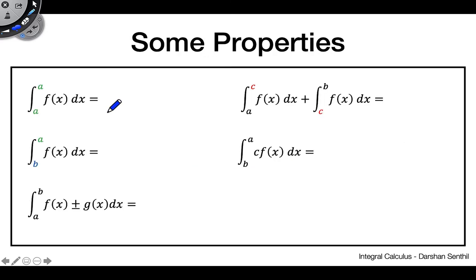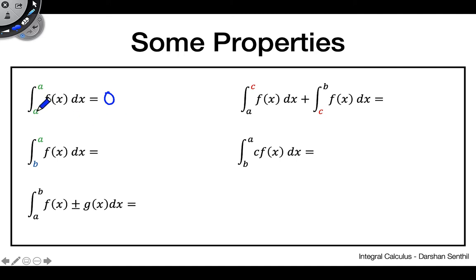The first property: the integral from a to a of f(x) dx equals zero. If you're finding the area under a curve from a to a, that's like finding the area under a single point — the curve only spans that one value. Points have no dimension, so that area is zero.